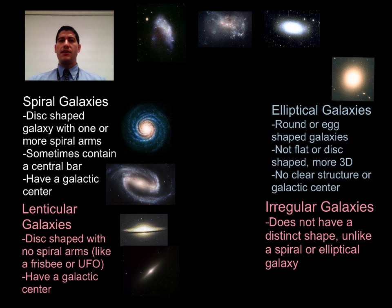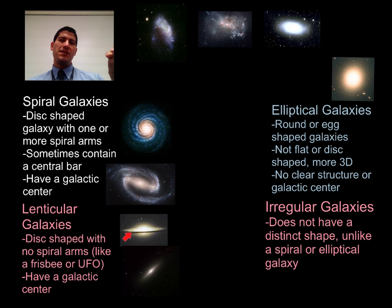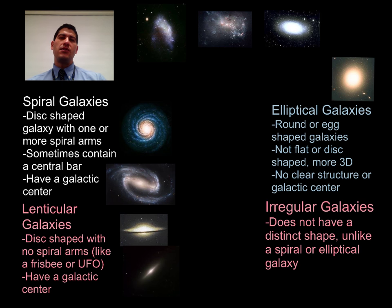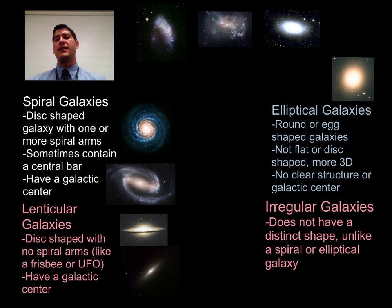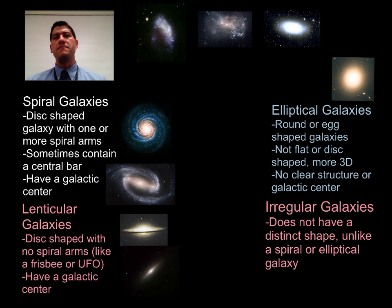This lenticular galaxy here also has a great image of a dust lane. A dust lane is a dense, obscuring band of interstellar dust. You see it as a dark swath against the background of a brighter object like a galaxy. So a dust lane is essentially a lot of dust collected together that blocks light.